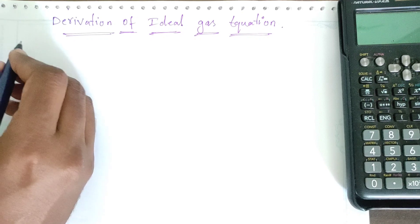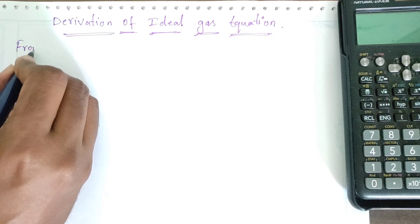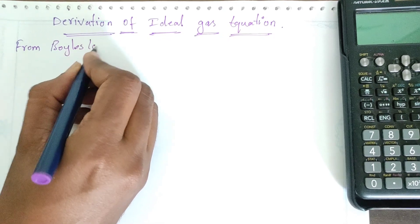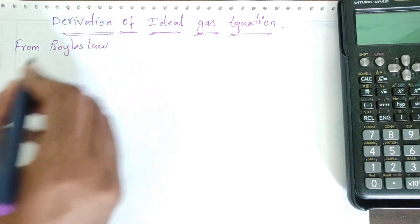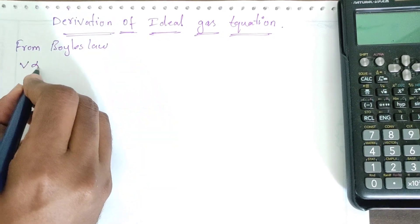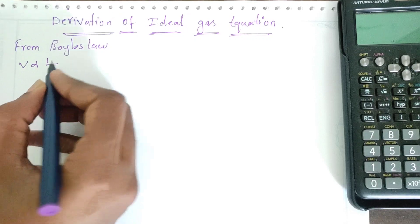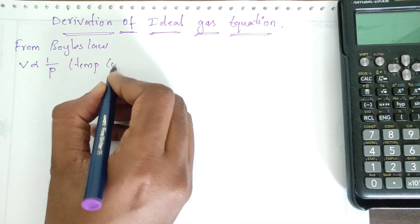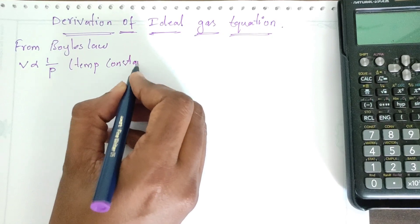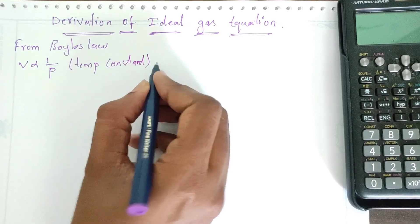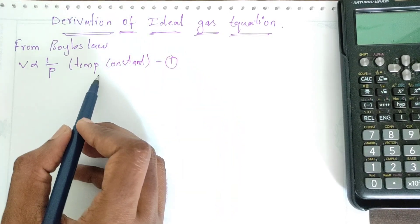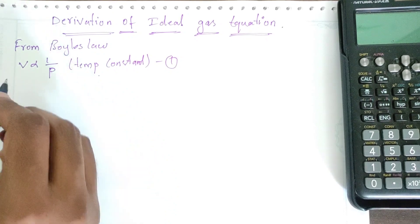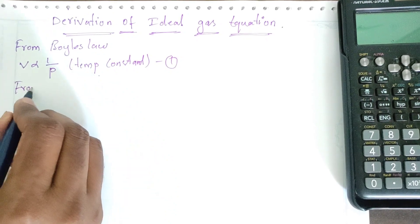From Boyle's law, the volume of a given gas is inversely proportional to pressure, keeping temperature constant. So V ∝ 1/P at constant temperature. This is Boyle's law.